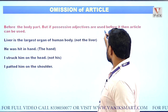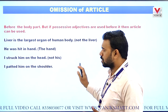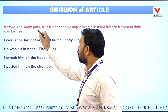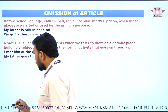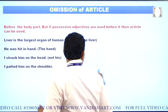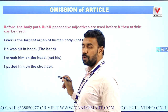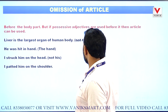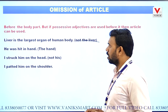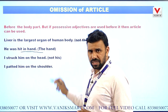Before body parts, no article is used. But if a possessive adjective is required before the body part, then instead of the possessive adjective, the article 'the' can be used. For example, 'Liver is the largest organ of human body' — not 'The liver is the largest organ'.